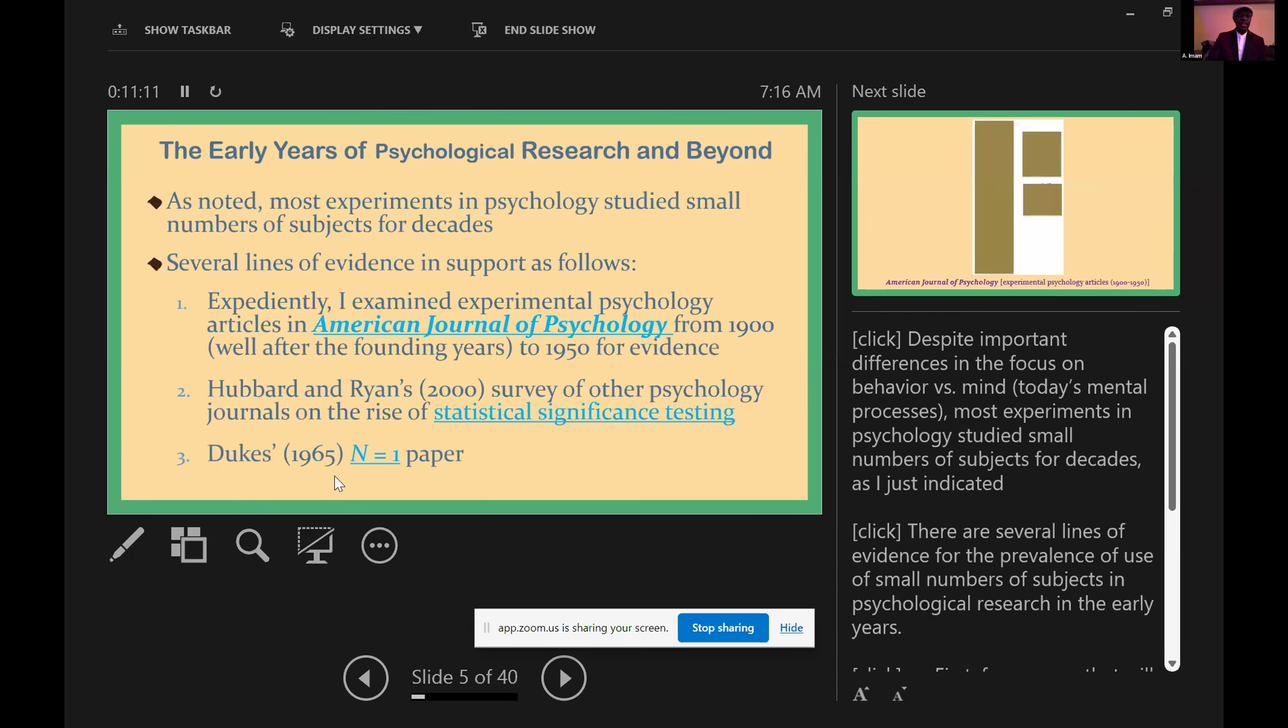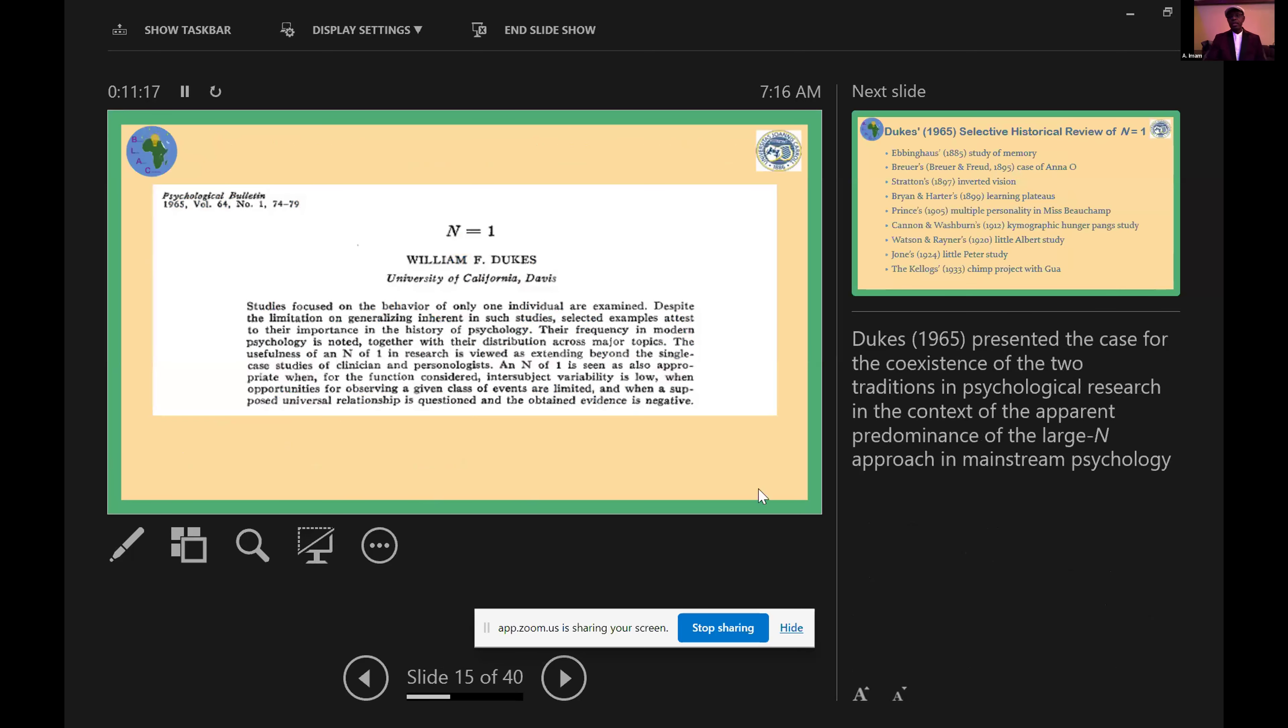Finally, the last line of evidence comes from Duke's N equals one paper, in which he presented the case for the coexistence of the two traditions in psychological research in the context of the apparent dominance of the large-N approach in mainstream psychology.